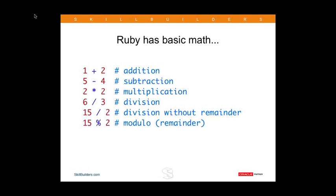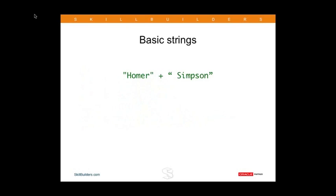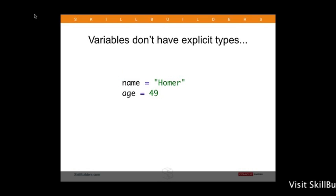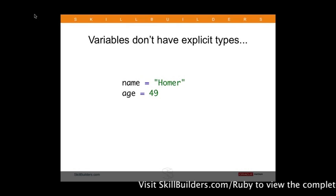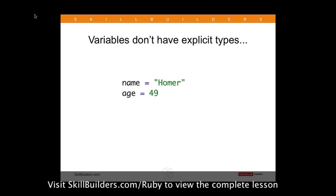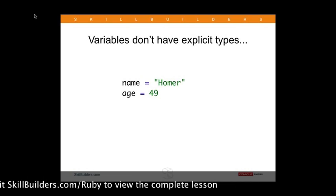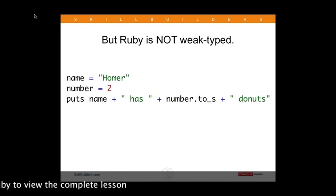Of course, there are lots of familiar things. Most programming languages have similarities, and Ruby is no exception. You have your basic math — plus, minus, multiplication, and division. You also have basic strings, and we use double quotes, though we can also use single quotes. We can use the plus sign to concatenate strings together. We have variables — we define a variable and we don't have to define an explicit type. When we assign a value to the variable, the data type becomes locked down.